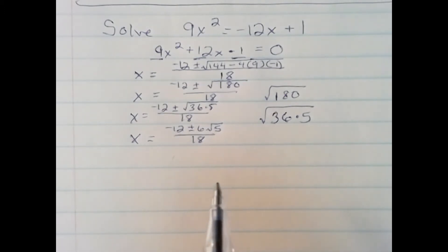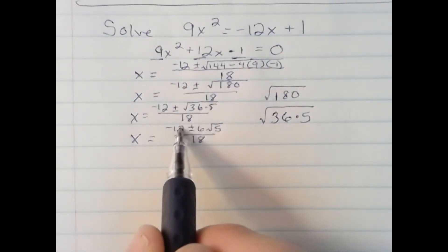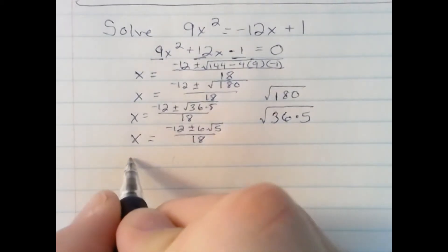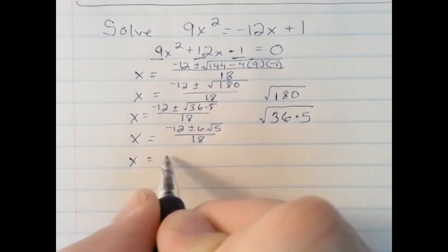I do need to simplify. Notice that I have a 12, a 6, and an 18. Each of those is divisible by 6. So essentially, I can factor out a 6 from the numerator and a 6 from the denominator.